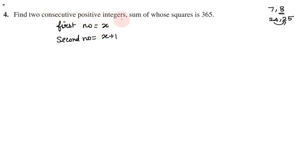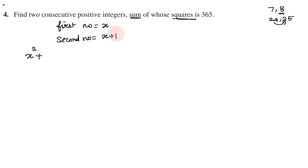Now, from the condition: Find 2 consecutive positive integers, sum of whose squares is 365. If you add their squares, you get 365. So, x squared plus x plus 1 whole squared is equal to 365. Sum of 2 squares: x squared plus (x+1) whole squared.